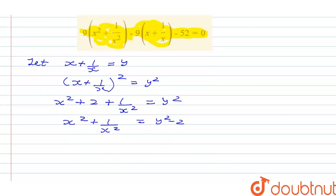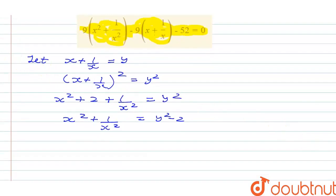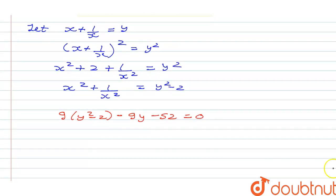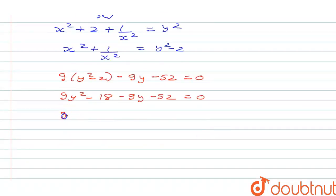Now we substitute this into the equation. It gives us 9 into y squared minus 2, minus 9y, minus 52 equals 0. Opening the bracket: 9y squared minus 18 minus 9y minus 52 equals 0, which simplifies to 9y squared minus 9y minus 70 equals 0.